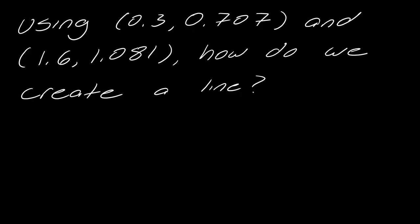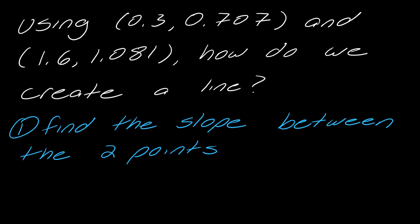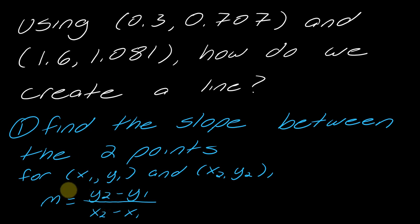Okay so now that I have these two points how do we create a line? A couple of steps here. First things first you want to find the slope between the two points and in case you forgot the slope don't worry I've got you. So if you've got these two points x1y1 and x2y2, the slope can be computed with this little equation here. Feel free to pause the video if you need to write that down.